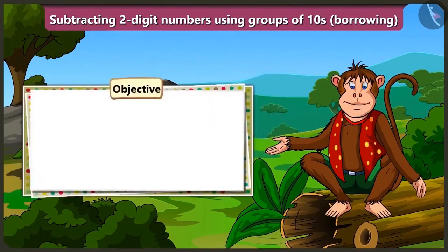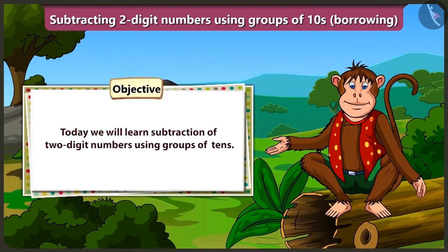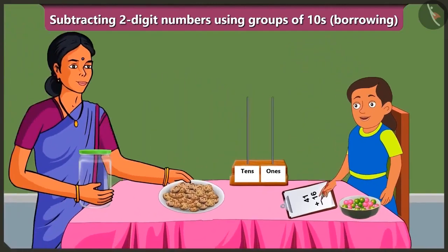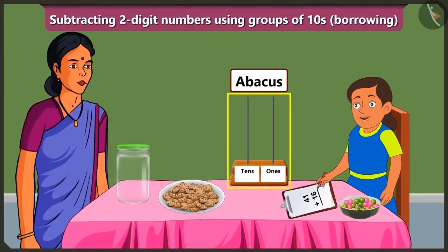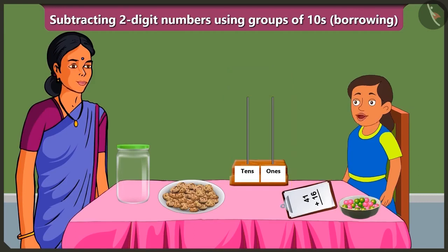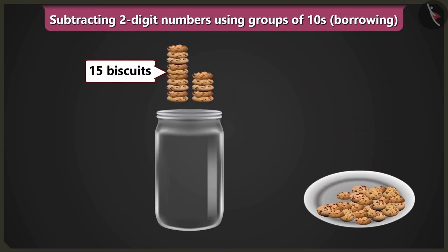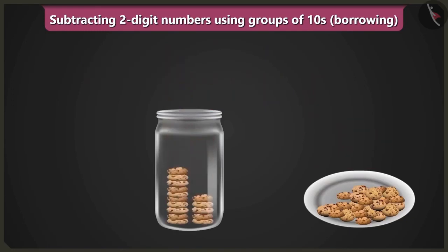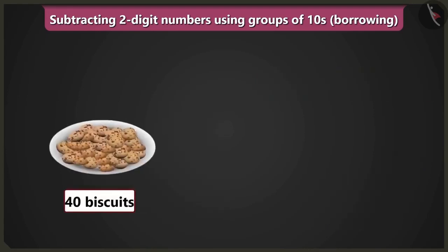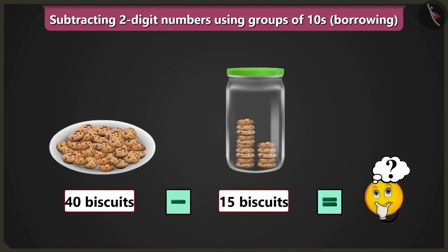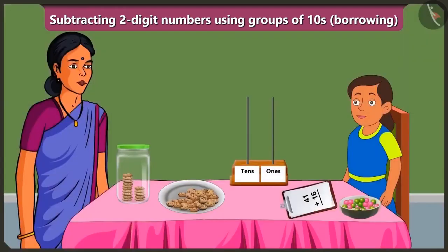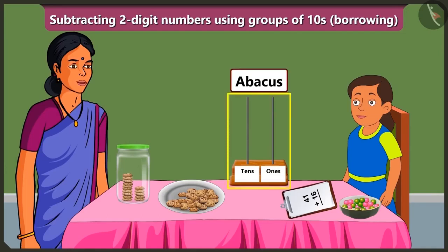Today, we will learn subtraction of 2-digit numbers by borrowing with the help of Bubbly's abacus. Yes, Mummy. Look, Bubbly. There are 40 biscuits in this plate. If I fill this jar with 15 biscuits, how many biscuits would remain in this plate? To know this, we would have to subtract 15 biscuits from 40 biscuits. Yes, but can you solve this subtraction without writing, just by borrowing with the help of this abacus?